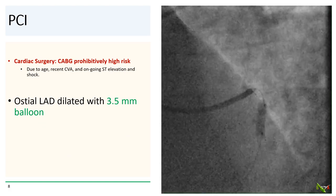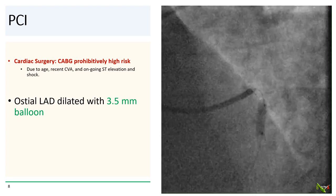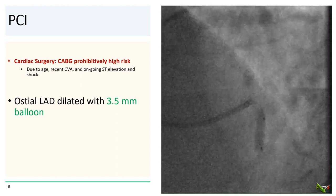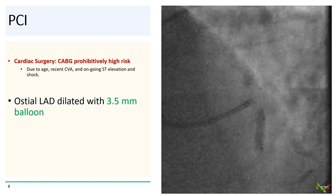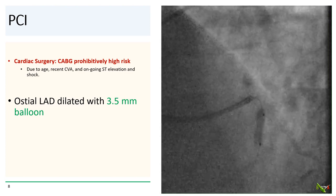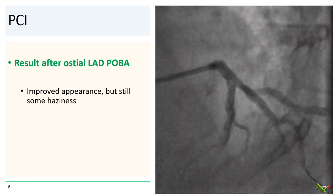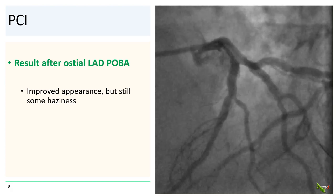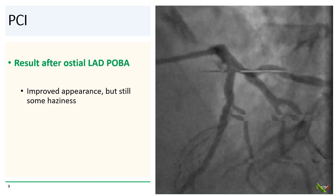We called our cardiac surgery colleagues, but they felt that CABG was too high risk due to his advanced age, his recent stroke, and ongoing ST elevation and shock. So we went ahead with a PCI strategy. We gently dilated the ostial LAD with a 3.5 millimeter balloon. After angioplasty, the LAD looked a little better, but there was still some haziness, probably reflecting the ruptured plaque.